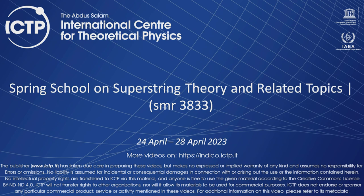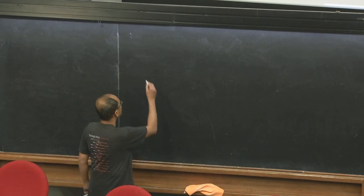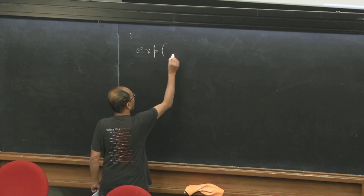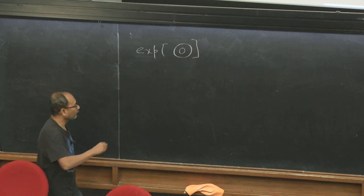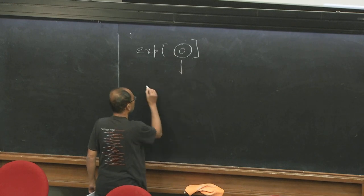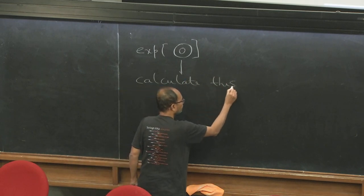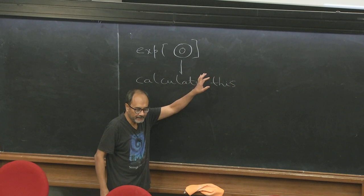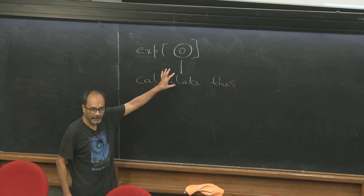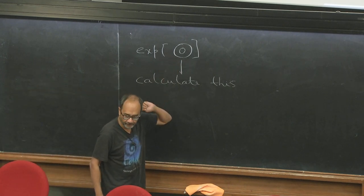Welcome to the lecture by Ashok on D-instantons. Last time we saw that every D-instanton amplitude has its overall normalization fixed by the exponential of the annulus. Today we are going to try to see how to calculate this. There are two reasons why you want to start with this: it appears in every D-instanton amplitude, and it is the simplest worldsheet diagram.